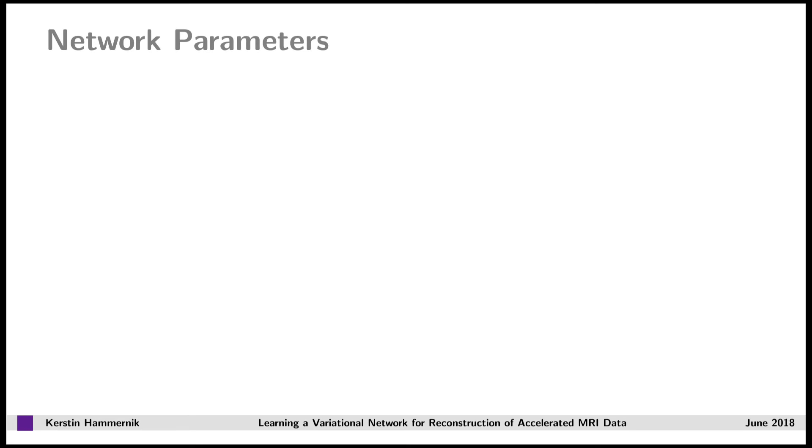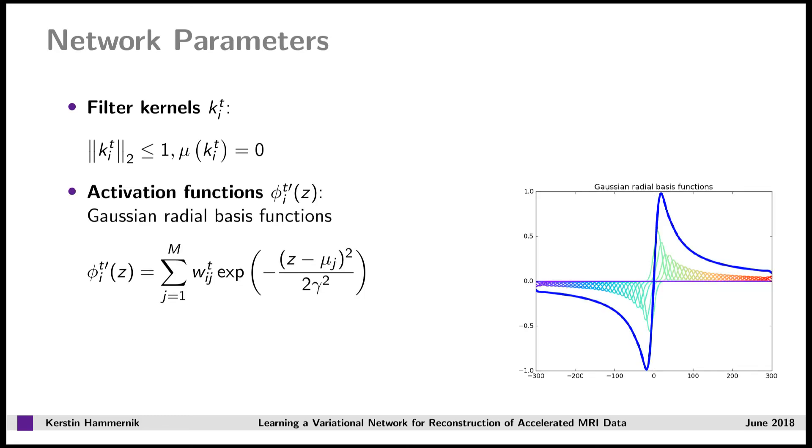During training, we impose some additional constraints on the parameters. For the filter kernels, we enforce them to be zero mean and have norm lower equal 1. To learn arbitrary activation functions, we parametrized them with Gaussian radial basis functions, where we learn the weights W. Finally, we learn the non-negative regularization parameter.